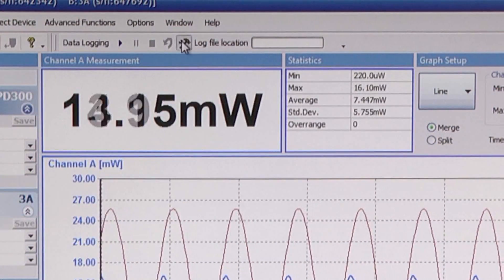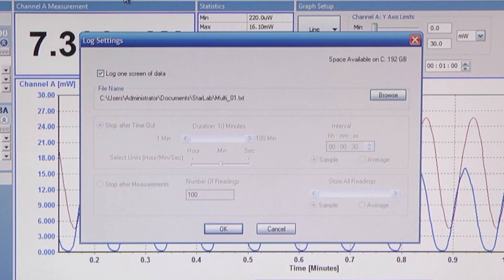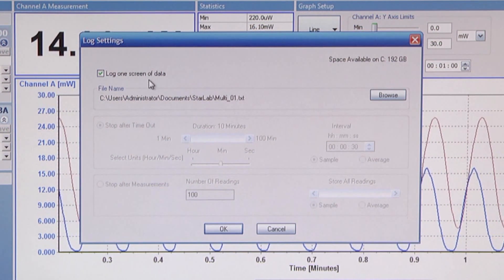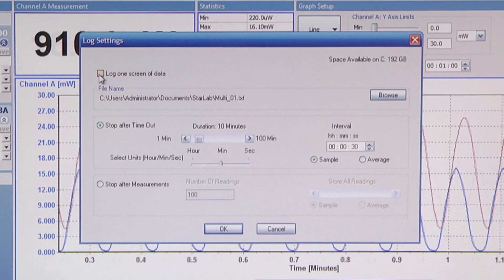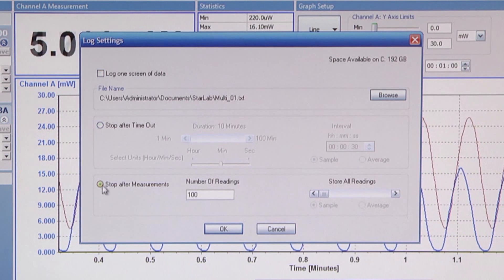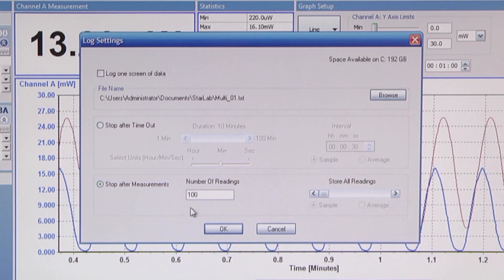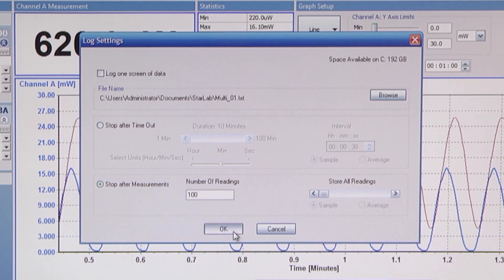The default here is to log one screen of data. We'll unclick it and choose stop after measurements, with the default here to stop after 100 readings. Click OK to exit the screen.